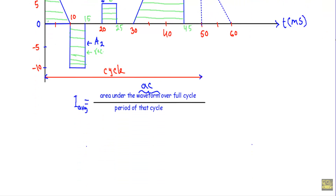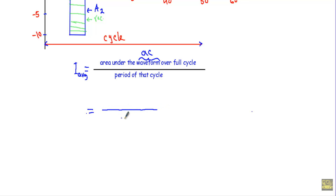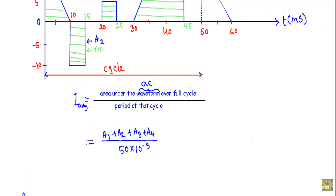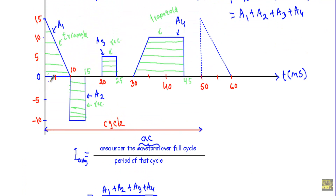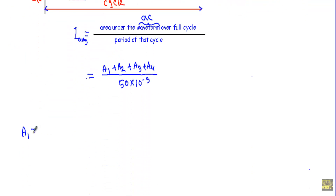Now let me write down the equation for I average. The period of the cycle is 50 ms, that is 50 × 10⁻³. The area over the full cycle is A1 plus A2 plus A3 plus A4. A1 is the area of the triangle with a base of 10 ms and a height of 15. So A1 equals half × 10 × 10⁻³ × 15, which equals 75 × 10⁻³.